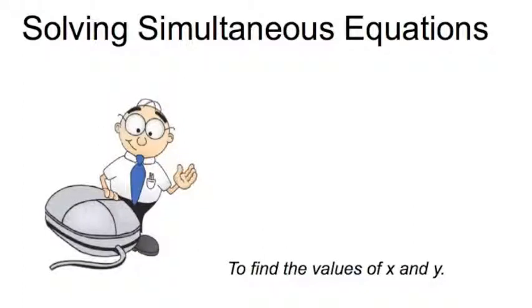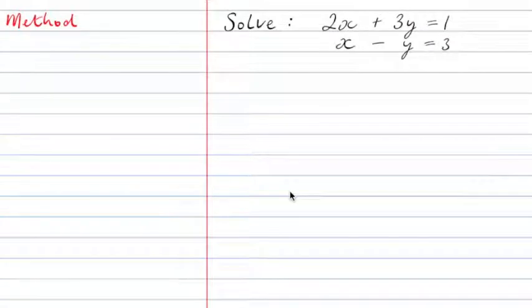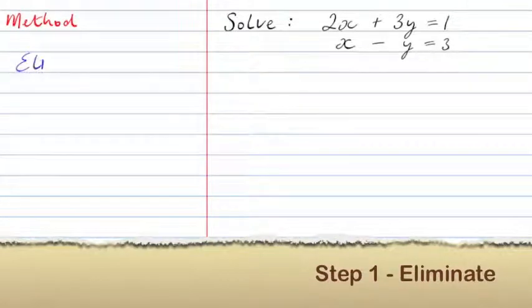This is an example of how to solve simultaneous equations. Solve 2x plus 3y equals 1 and x minus y equals 3.